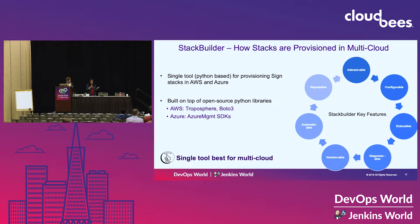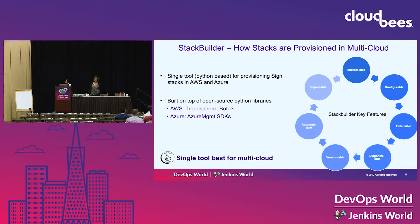Stack Builder is a single Python-based command line tool built on top of open source technologies such as Troposphere and Boto3 for AWS, and several Azure management SDKs for deploying Azure stacks. It has several features: it's developer-friendly with a command line interface; it's configuration-driven and extensible — it can evolve with the company; it provides diagnostic information for troubleshooting; it has version control providing an audit trail of code changes; it can be automated using Jenkins; and most importantly, it's repeatable — no matter how many times you create the stacks, they'll all be the same.